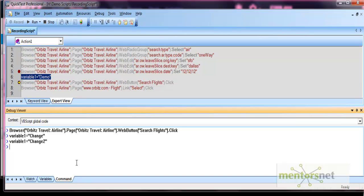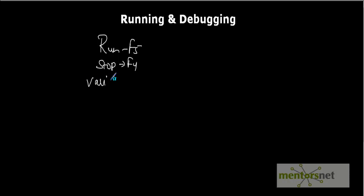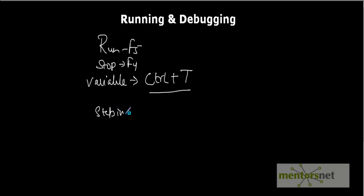This is how you can debug scripts in QTP with different options. To summarize: the shortcut to run the script is F5, shortcut to stop is F4. To see a variable value, press Ctrl+T. For debugging, to step into use F11, and to step over use F10. This is how debugging and running works in QTP.